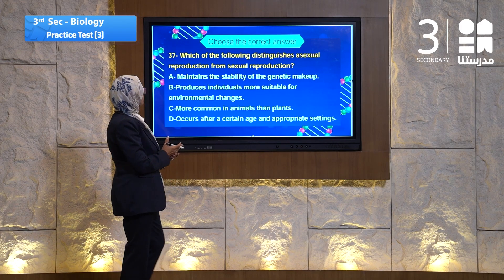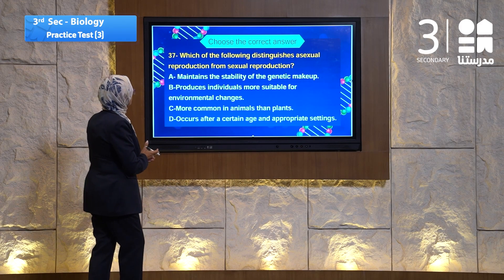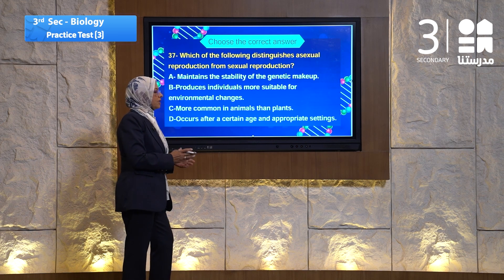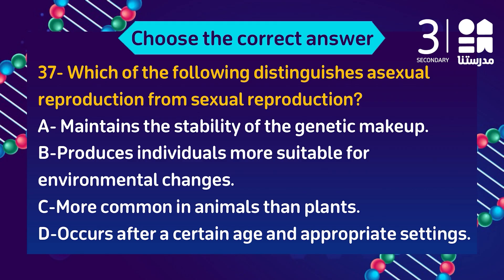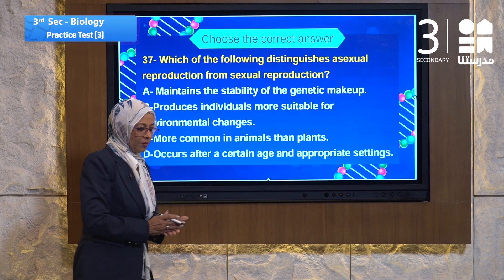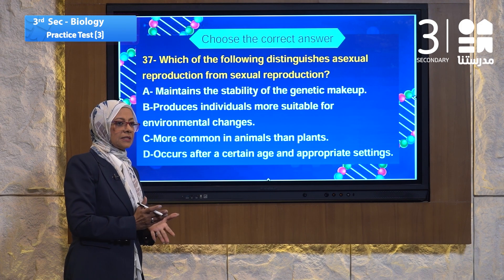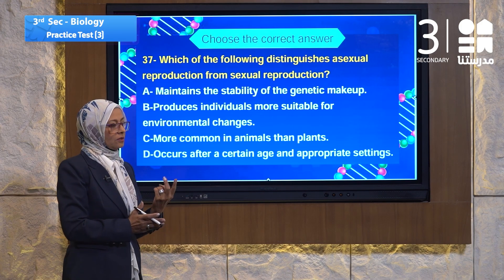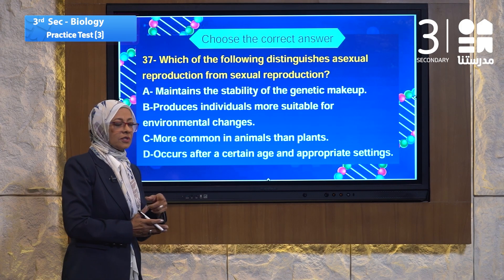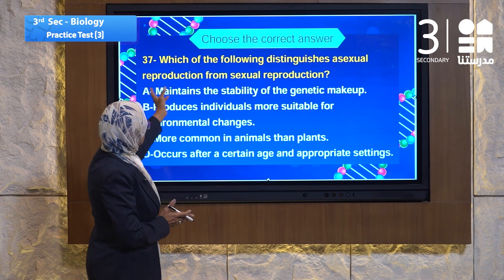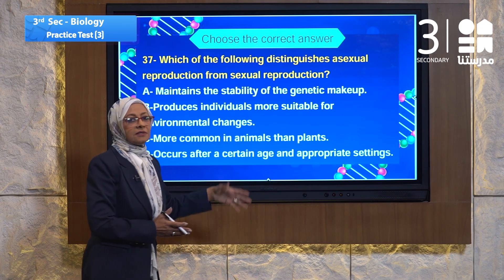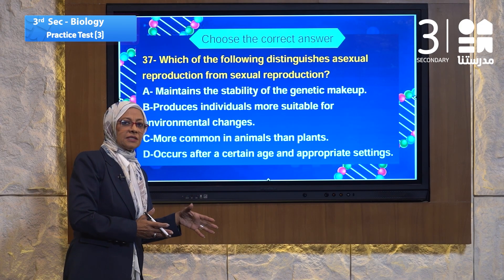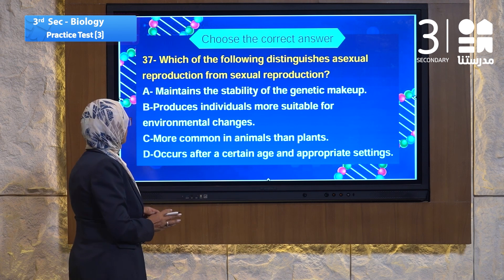Let's go to question number 37. Question 37 speaks about reproduction again — sexual reproduction. Which of the following distinguishes asexual reproduction from sexual reproduction? Asexual reproduction produces individuals without needing two parents; one parent only is enough. Sexual reproduction is produced by gametes and requires two parents.